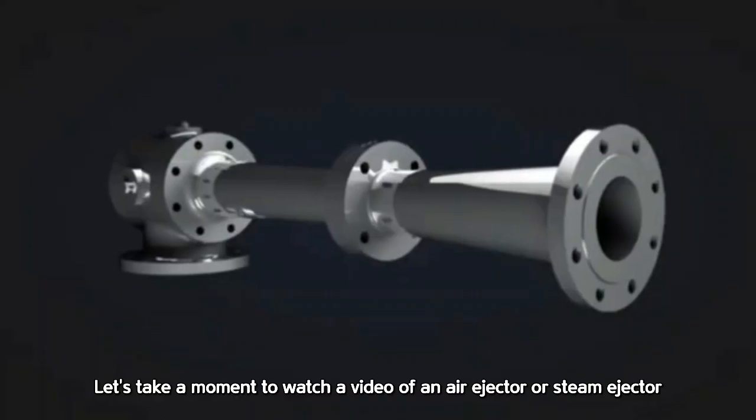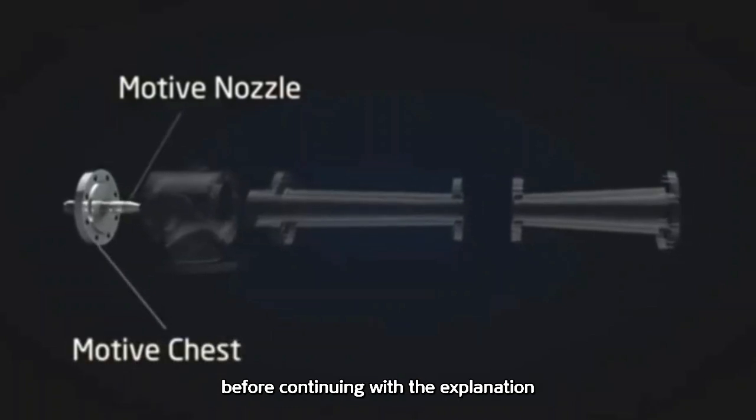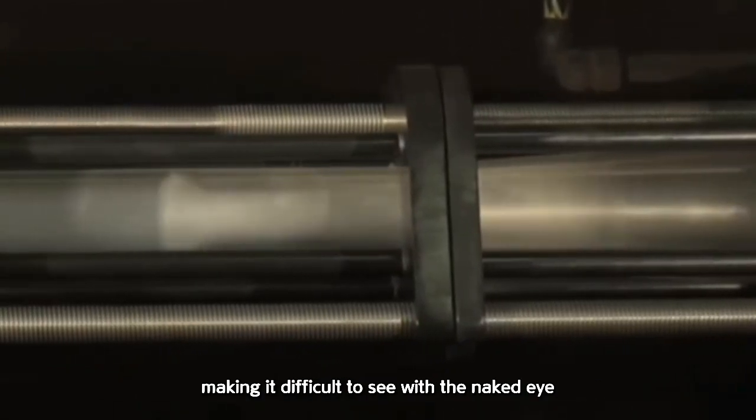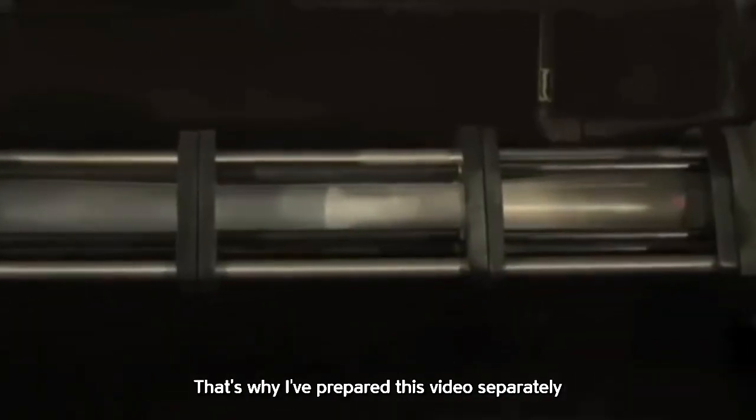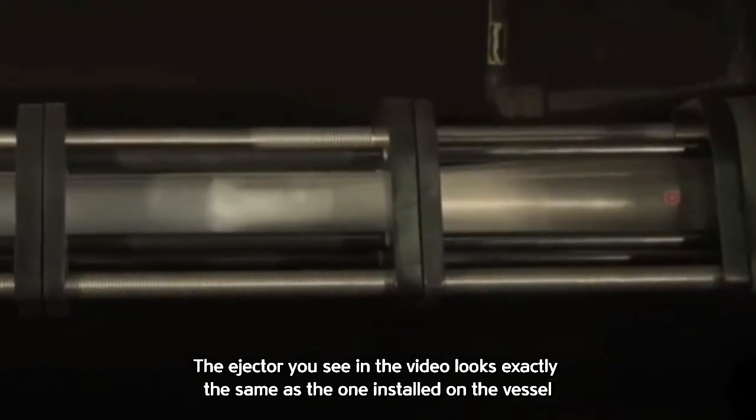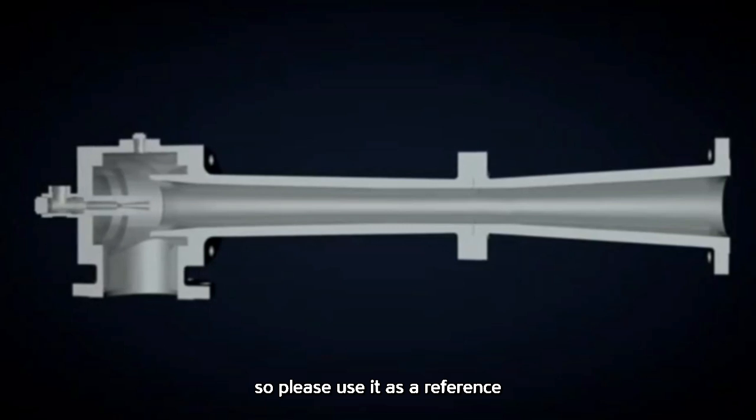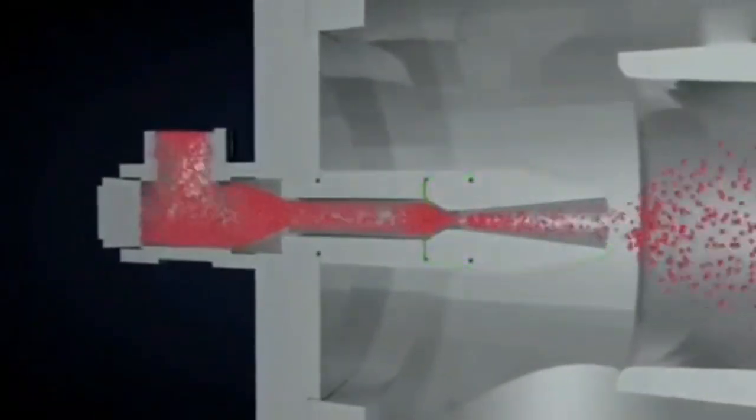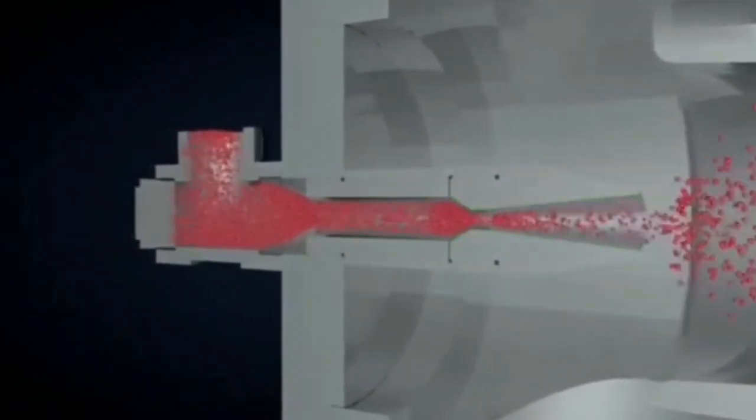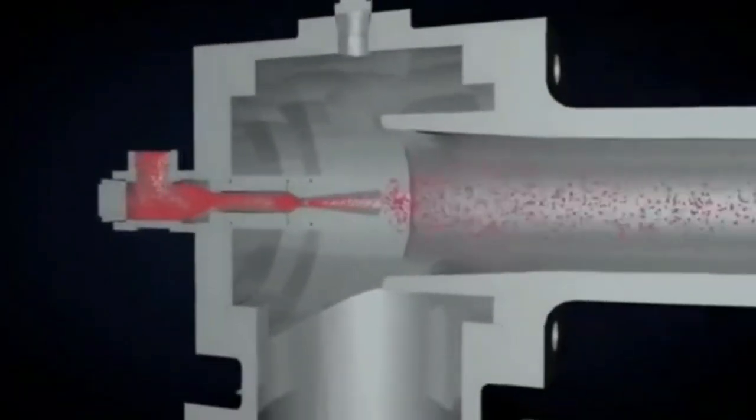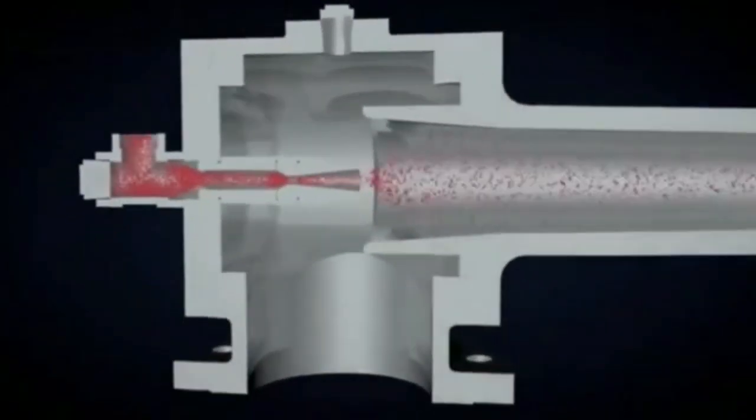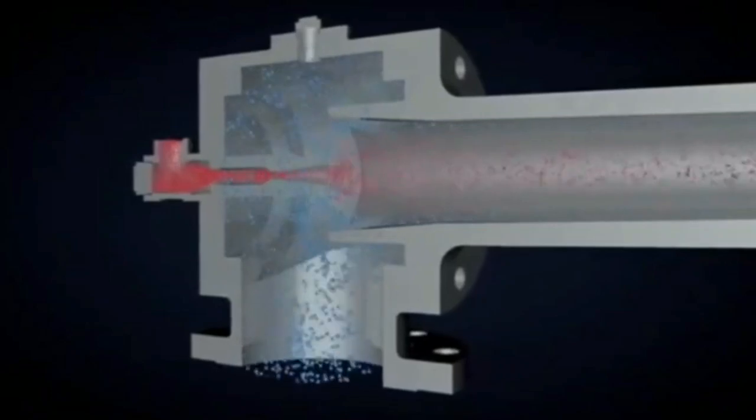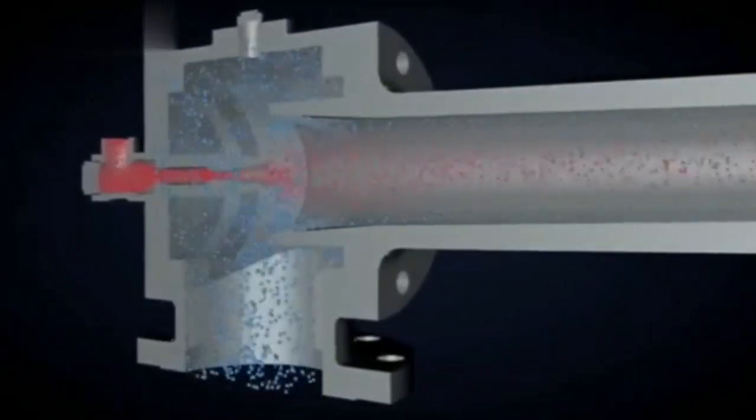Let's take a moment to watch a video of an air ejector, or steam ejector, before continuing with the explanation. On board, the steam ejector is wrapped in insulation, making it difficult to see with the naked eye. That's why I prepared this video separately. The ejector you see in the video looks exactly the same as the one installed on the vessel, so please use it as a reference.